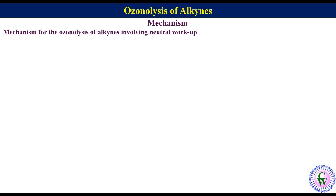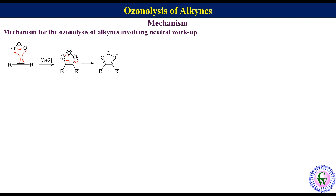In the mechanism involving neutral workup, alkyne and ozone react together via 3+2 cycloaddition to produce a primary ozonide, also called molozonide or 1,2,3-trioxolene, which undergoes ring opening to produce a species with a carbonyl group on one carbon and a carbonyl oxide on the adjacent carbon. A 180-degree rotation of the carbonyl group through the single bond gives another conformation, which undergoes cyclization to produce an ozonide.